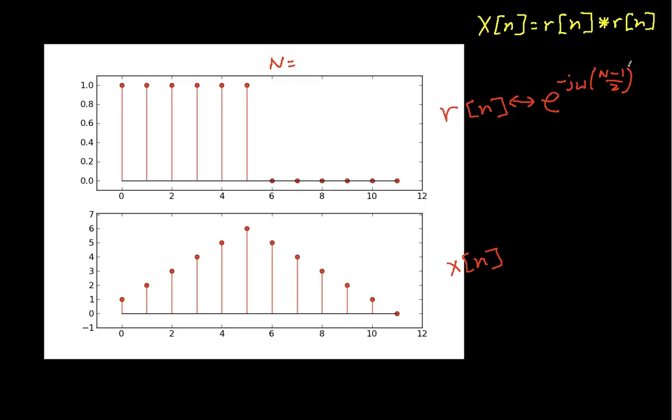So it has this phase term, and then we have sin(ωN/2) over sin(ω/2). These multiplied by each other represent the Fourier transform R(e^jω).